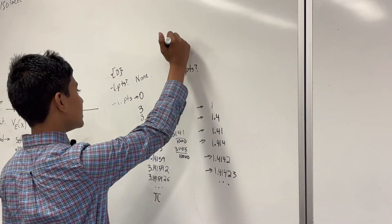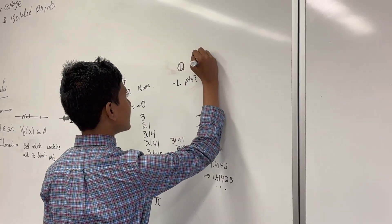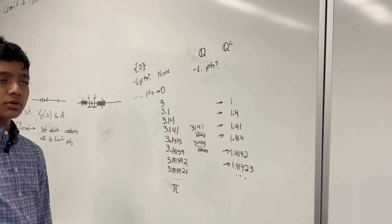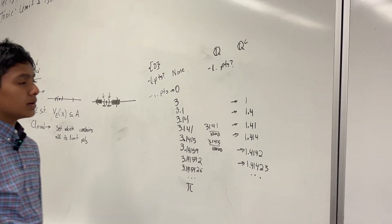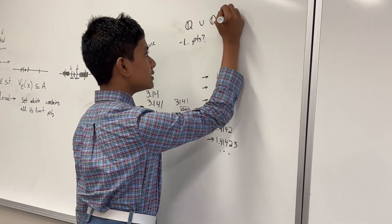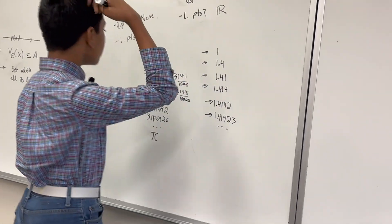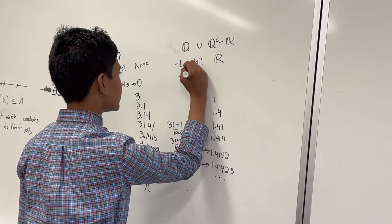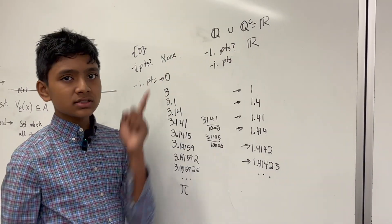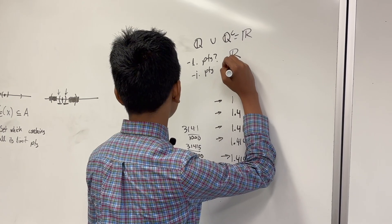That means that every irrational number is also a possible limit point. Adding the rationals and irrationals together, this is just the real numbers. And what about the isolated points of Q? Well, since every single rational number is a limit point, there are no isolated points.